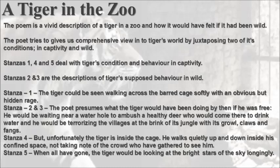Let's sum up. The poem is a vivid description of a tiger in a zoo and how it would have felt if it had been wild. The poet gives us a comprehensive view into the world of the tiger by juxtaposing two conditions — in captivity and in the wild. Stanzas 1, 4, and 5 deal with the tiger's condition in captivity, while stanzas 2 and 3 describe the tiger's supposed behavior in the wild. In stanzas 2 and 3, the tiger would be waiting near a water hole to ambush a deer, and terrorizing the villagers at the brink of its jungle with its growl, claws, and fangs.